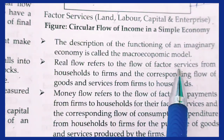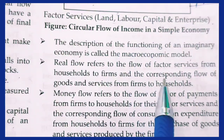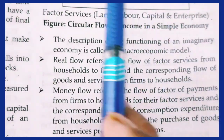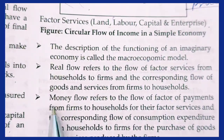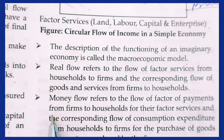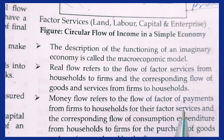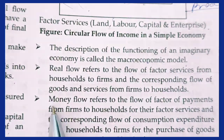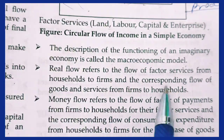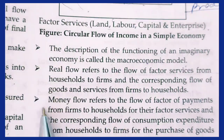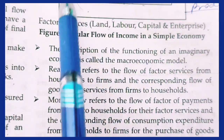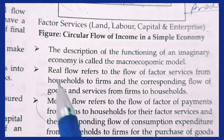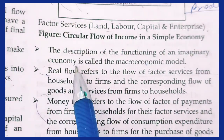Real flow refers to the flow of factors and services from households to firms and the corresponding flow of goods and services from firms to households. Money flow refers to the flow of factor payments from firms to households for their factor services and the corresponding flow of consumption expenditure from households to firms. In summary, real flow involves goods and services, while money flow involves cash — for example, when a firm pays salary to an individual.